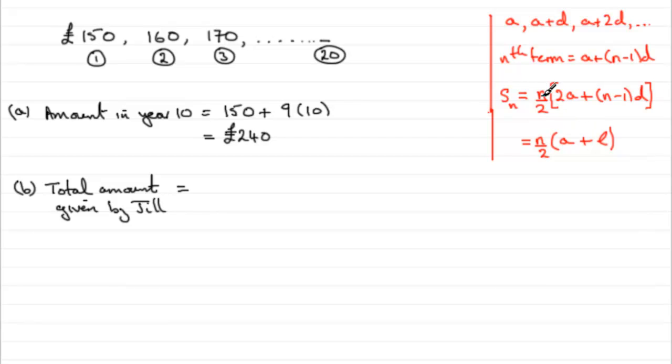So, we've got everything we need, n being 20, so we've got 20 divided by 2, n over 2, all multiplied by twice the first term. So, that's going to be 2 times the 150, plus n minus 1, well, n was 20, so n minus 1 is going to be 19,